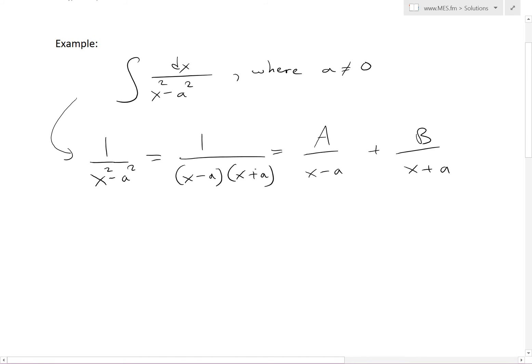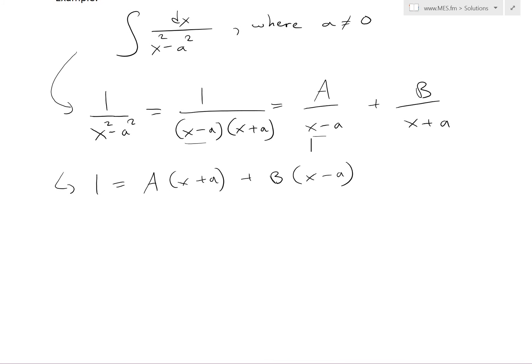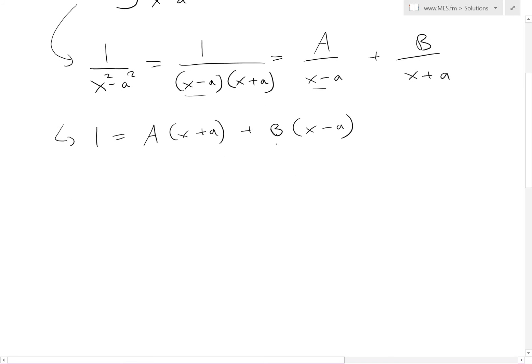I'll multiply both sides by x minus a times x plus a, so we get 1 equals A times x plus a, plus B times x minus a, because this x plus a cancels with this, and then this x minus a cancels with this here. So now all we have to do is solve these coefficients.